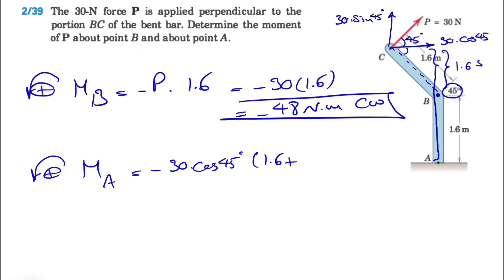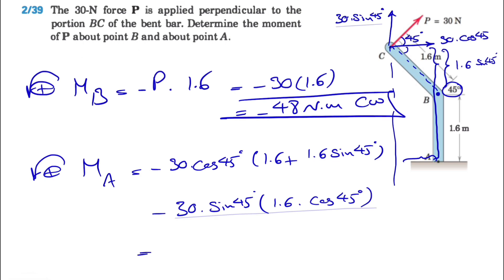And we have the moment of the 30 sine of 45 degrees component. For that one, we have to find this distance, which is basically 1.6 cosine of 45 degrees. So if we calculate these two, we're going to get minus 81.9 newton meters. And again, the negative sign shows that the moment is clockwise.